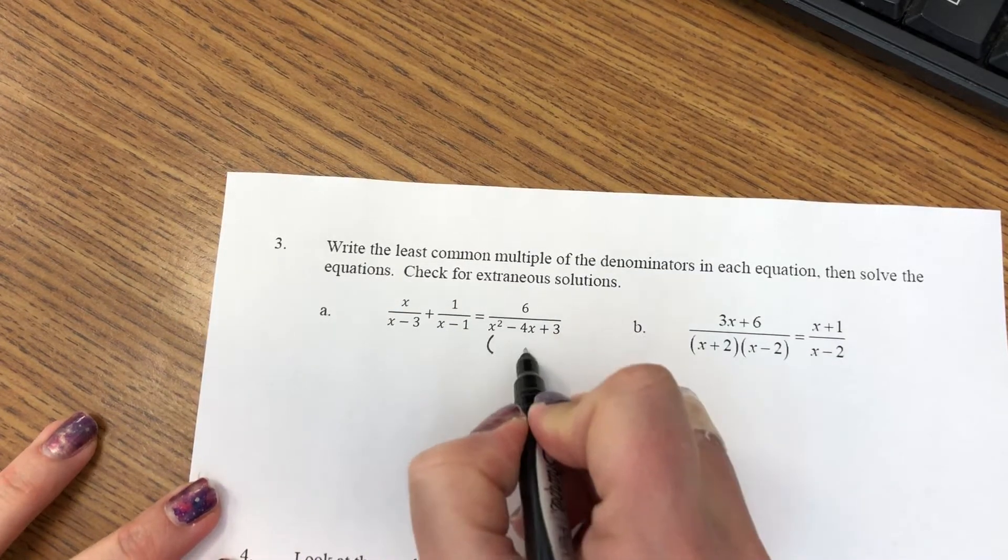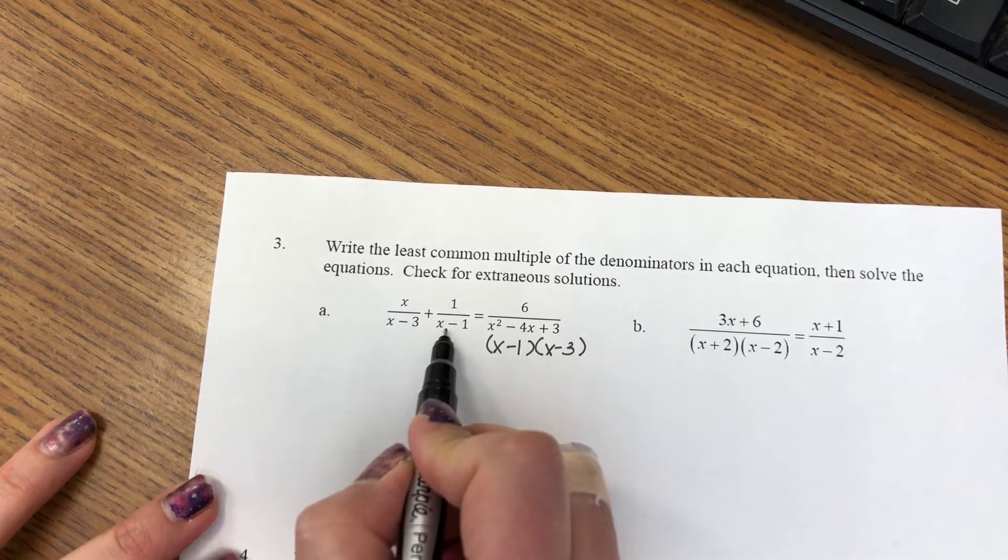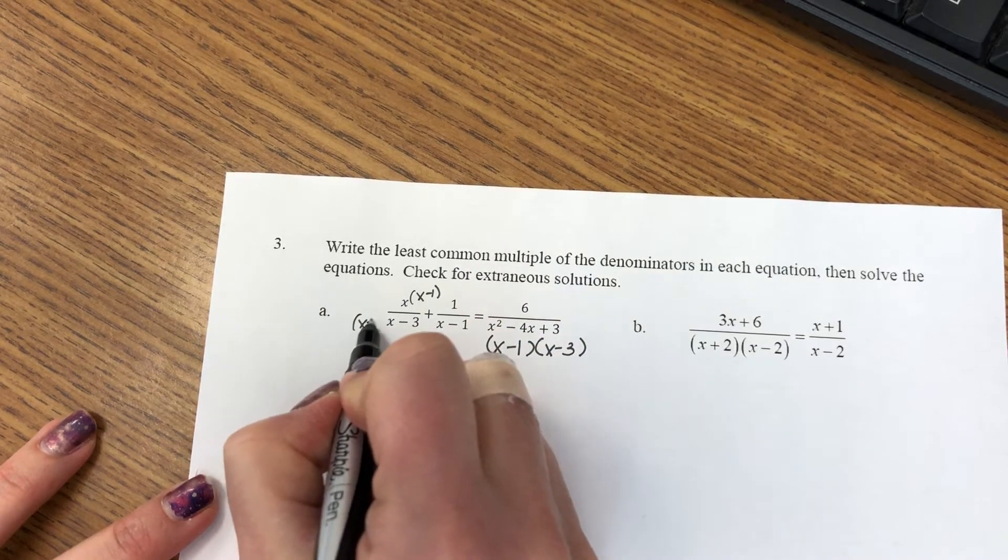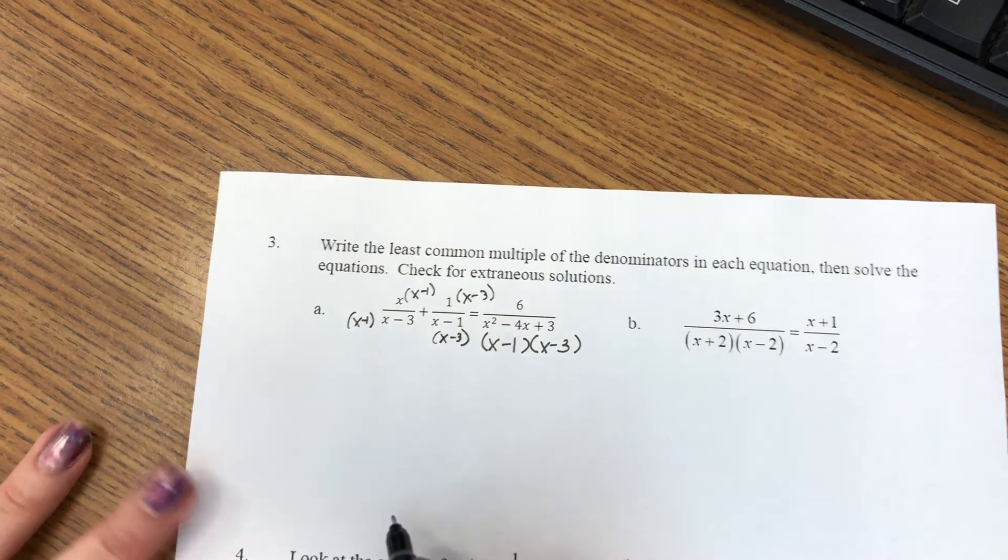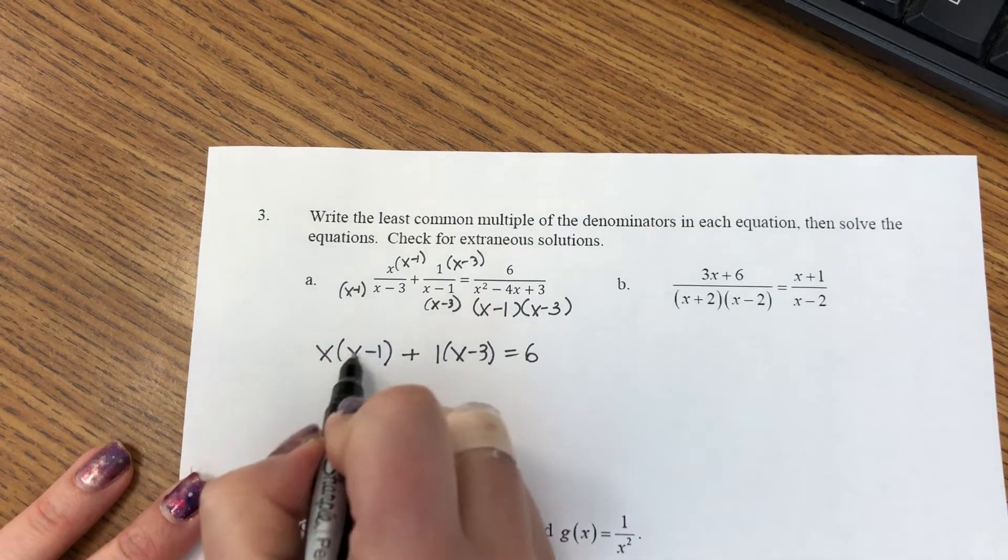So for a, first I'm going to factor this denominator so I can figure out what my common denominator is going to be. And nicely, these factors are the individual denominators here. So this first fraction is missing the x minus 1, and this fraction is missing the x minus 3. So now that I have common denominators, I can just equate my numerators and solve for x. So I'm going to distribute the x.